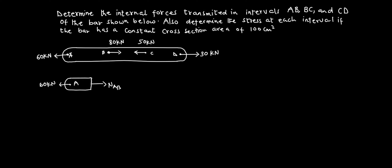What we have to do is take the sum of the forces in the x direction, which equals zero because the system is in equilibrium. So we have minus 60 kilonewton plus N_AB equals zero. When you solve this, you get N_AB equal to 60 kilonewtons. You see that N_AB is positive and the external force is negative, so N_AB is just coming to balance the external force. That is the value of N_AB.